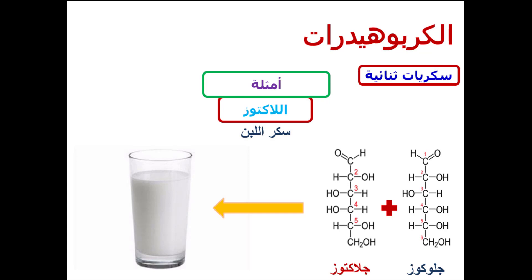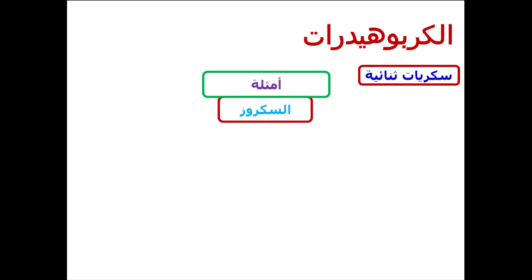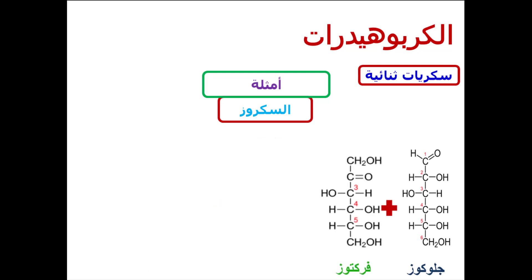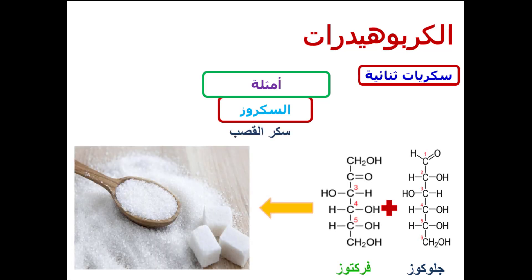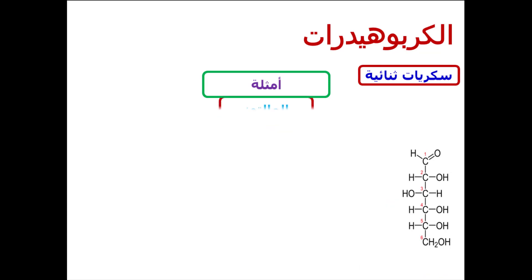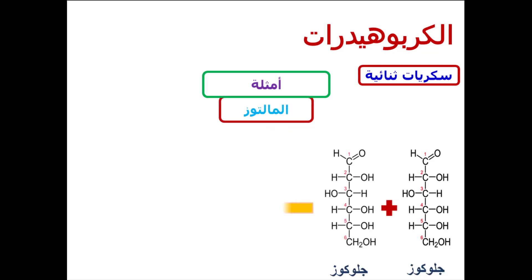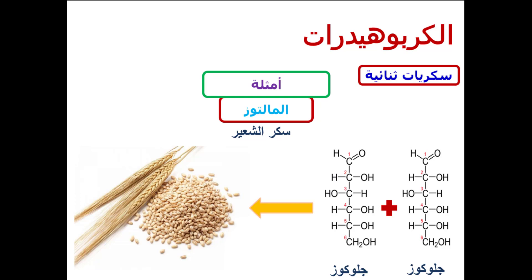أمثلة السكريات الثنائية: اللاكتوز وهو سكر اللبن، يتكون من جزيء جلوكوز وجزيء جالاكتوز. السكروز يتكون من جزيء جلوكوز وجزيء فركتوز وهو سكر القصب. المالتوز يتكون من جزيئين جلوكوز وهو سكر الشعير.